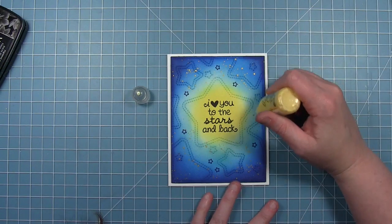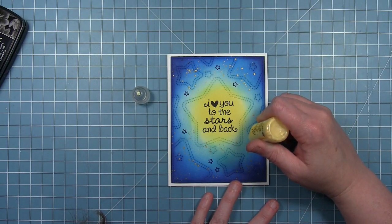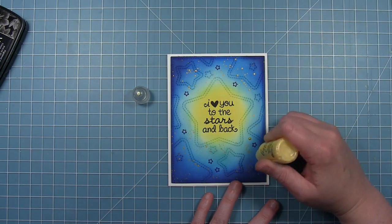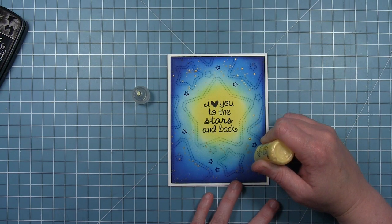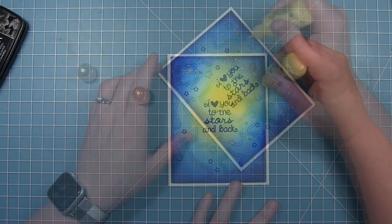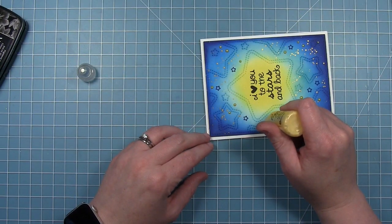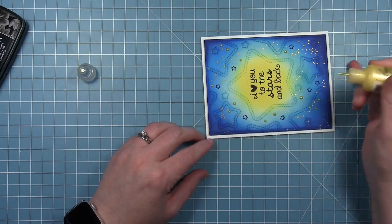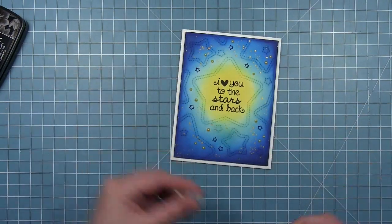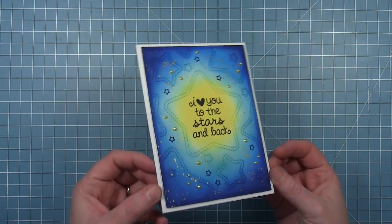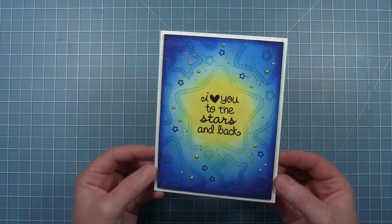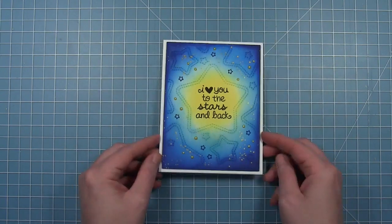And then finally to finish it off I have some liquid pearls here in a yellow color and I'm just going to add some dots of those around in my stars. So I love that shimmer when the light hits that gold it's just so pretty.